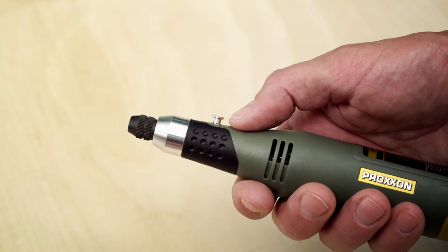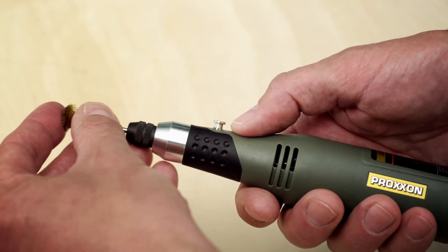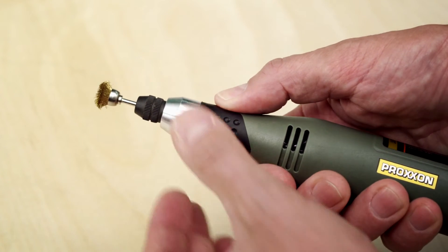The precision ball bearing mounted spindle can be locked at the push of the button, making it easy to exchange accessories.